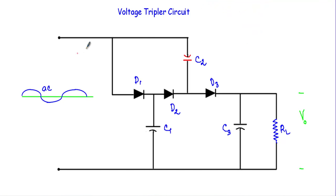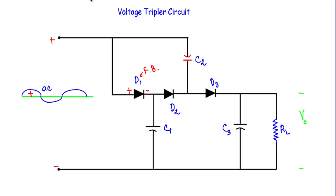I am applying an alternating sinusoidal voltage between these two terminals and taking the output across the load resistor RL. During the positive half cycle, this terminal will be positive and this terminal will be negative. The positive terminal is connected with the P side of diode D1 and the negative terminal is connected with the N side, so diode D1 will be in forward bias. When a diode is in forward bias, I can replace it with a short circuit.